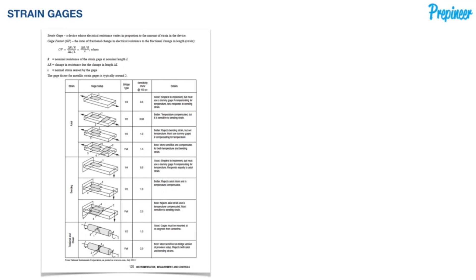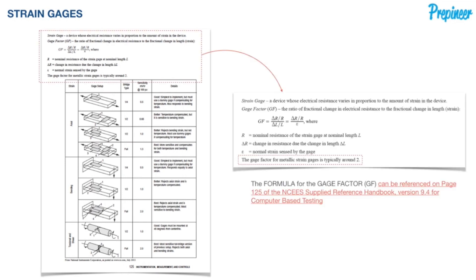One more piece of information that's given to us in our NCES reference handbook on page 125. We see that the gauge factor for a metallic strain gauge is typically around two. This is a very important piece of information because some problems are just going to tell you that a metallic strain gauge is used without giving you the gauge factor, but you're going to need it. There's no other way to find it other than it being noted in the practice problem or us knowing it from this piece of information. So always remember that a metallic strain gauge, the gauge factor for it is typically around two.